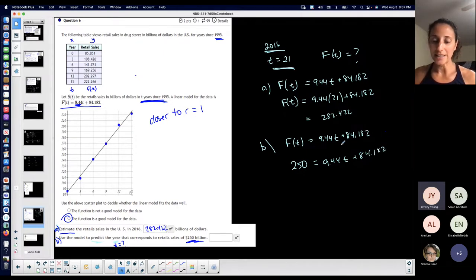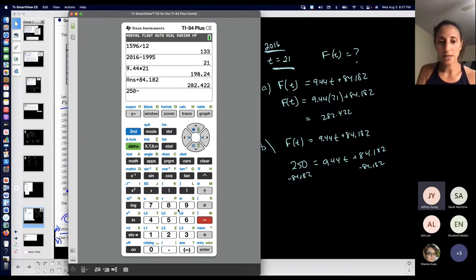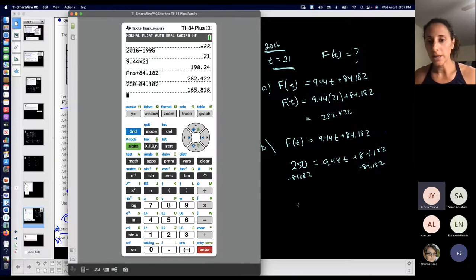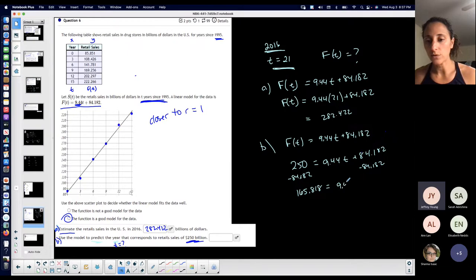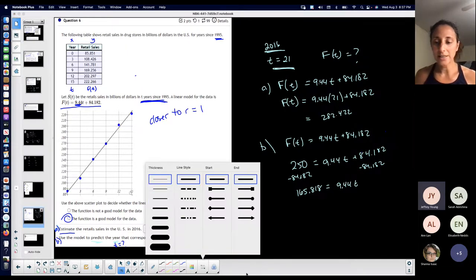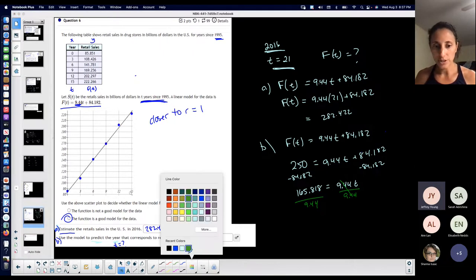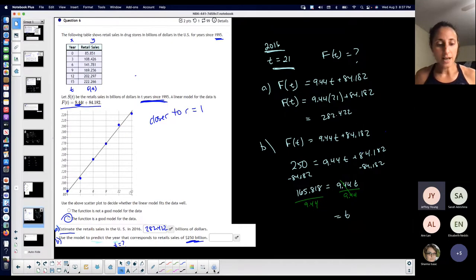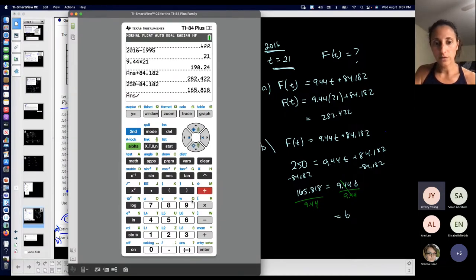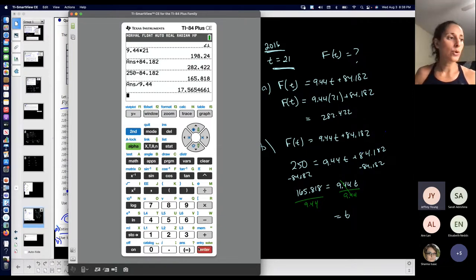84.182. So I got to isolate T. If I want to isolate T, I have to move this first. So we call it inverse operation to move it over. Right? And you can use your calculator 250 minus 84.182. Make sure you can see what you're doing because mine's a little sloppy. 165.818 is equal to 9.44 T. I didn't do anything with that yet. Being that I want T to be isolated and T is being multiplied by 9.44, my inverse operation is division. Once I divide by 9.44, it cancels. I get 1 T, which is T, which is what I want. And then I don't know what that is. 165.818 divided by 9.44, right? Whatever I do to one side, I do to the other. And I get 17.565.